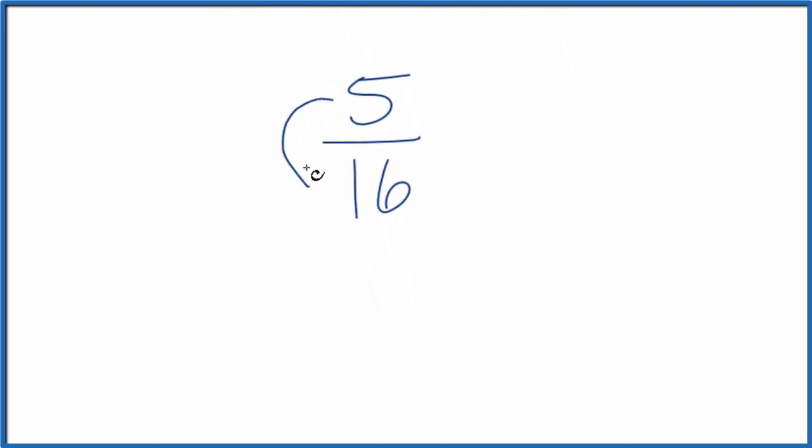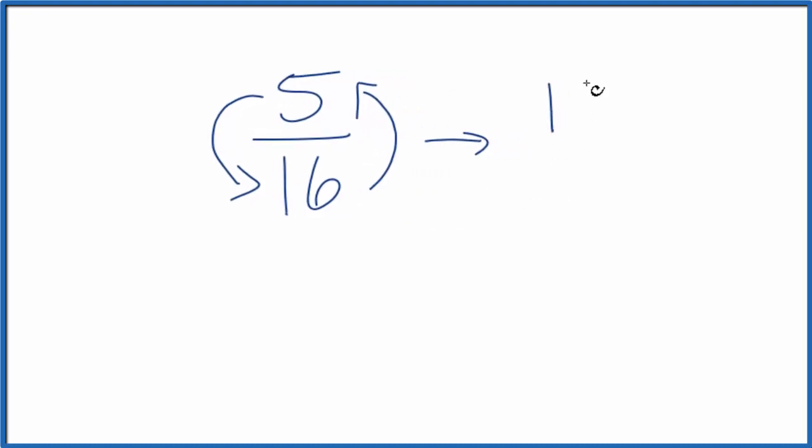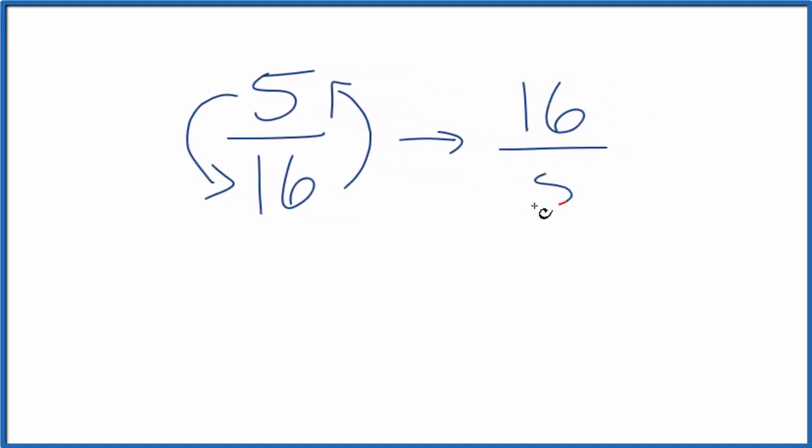We could take the numerator, move that down to the bottom, and the denominator to the top. That's going to give us the reciprocal. So we have 16 as our numerator and 5 as our denominator. 16 fifths, that's the reciprocal for 5 16ths.